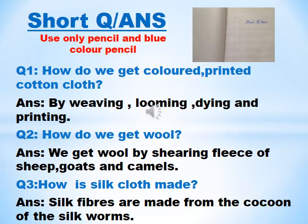Question number 1: How do we get colored printed cotton cloth? Answer: By weaving, looming, dyeing, and printing. Question number 2: How do we get wool? Answer: We get wool by shearing the fleece of sheep, goats, and camels.